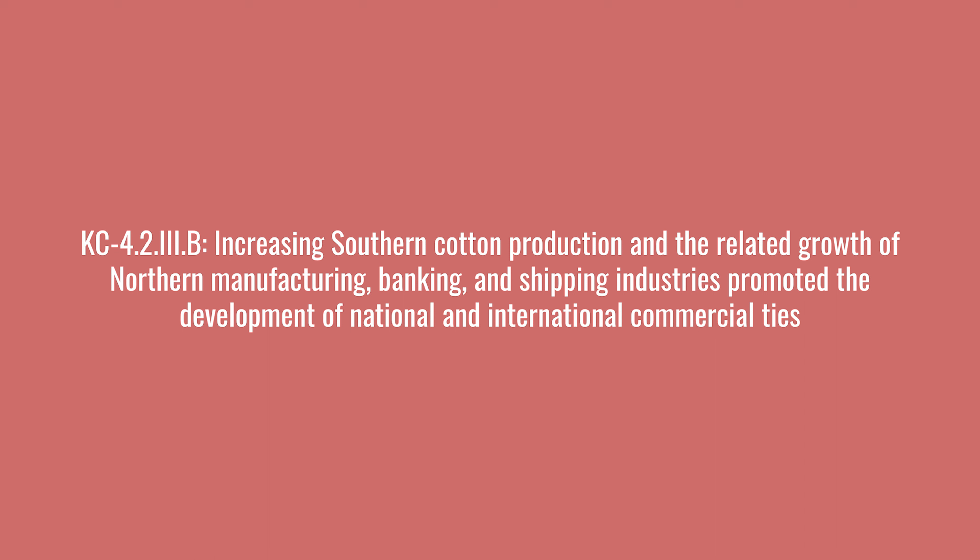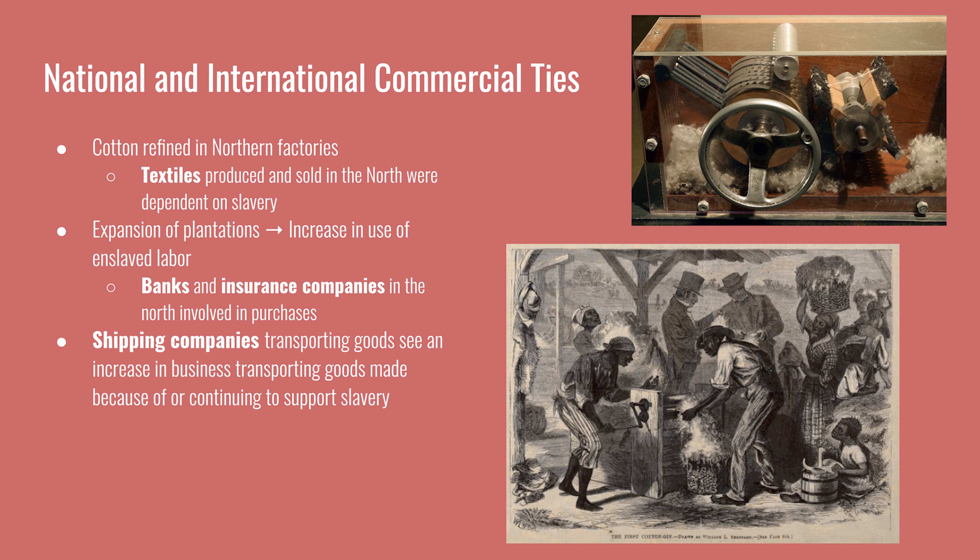Increasing Southern cotton production and the related growth of Northern manufacturing, banking, and shipping industries promoted national and international commercial ties. Cotton was grown in the South using enslaved labor and refined in Northern factories. As plantations expanded, they increased the use of enslaved labor. The price of an enslaved person varied based on age, gender, physical ability, and history of defiance, and was often high enough that financing through a bank loan was required, making banks and insurance companies complicit in the institution.